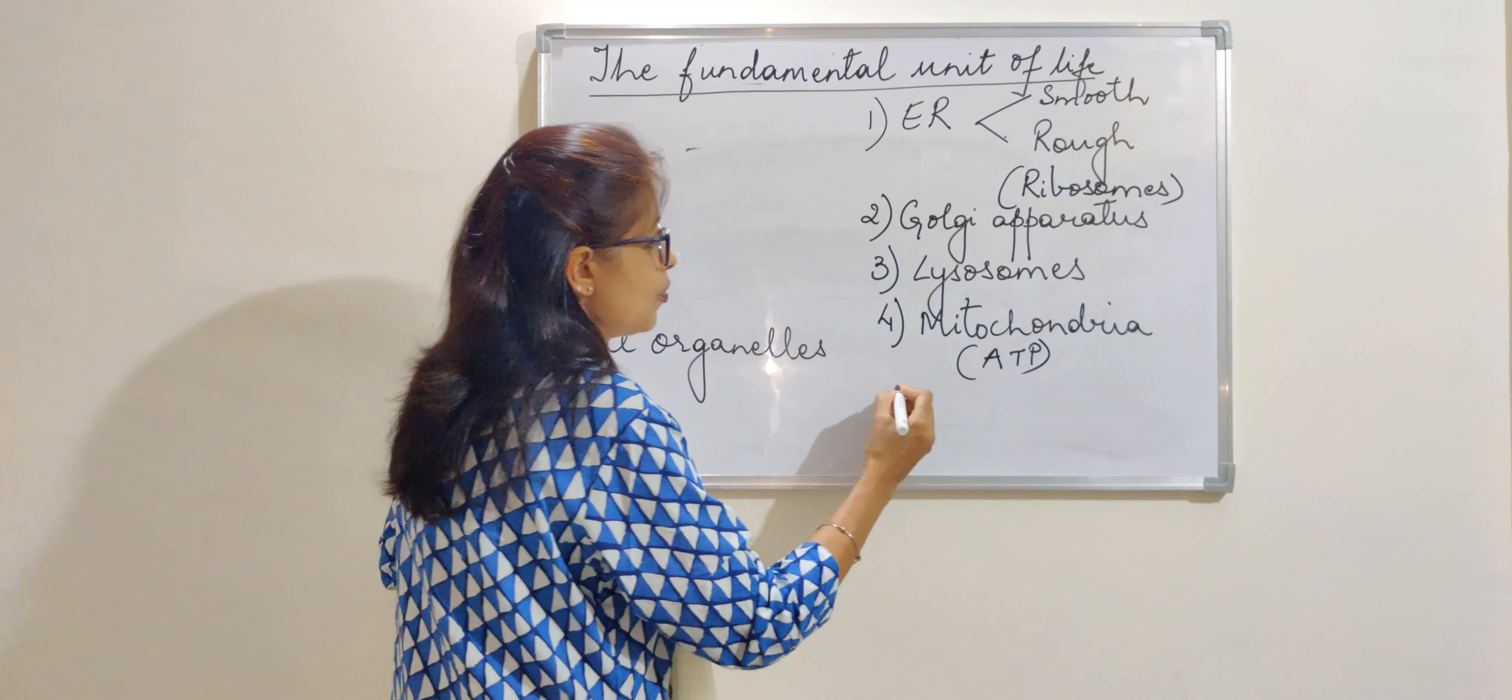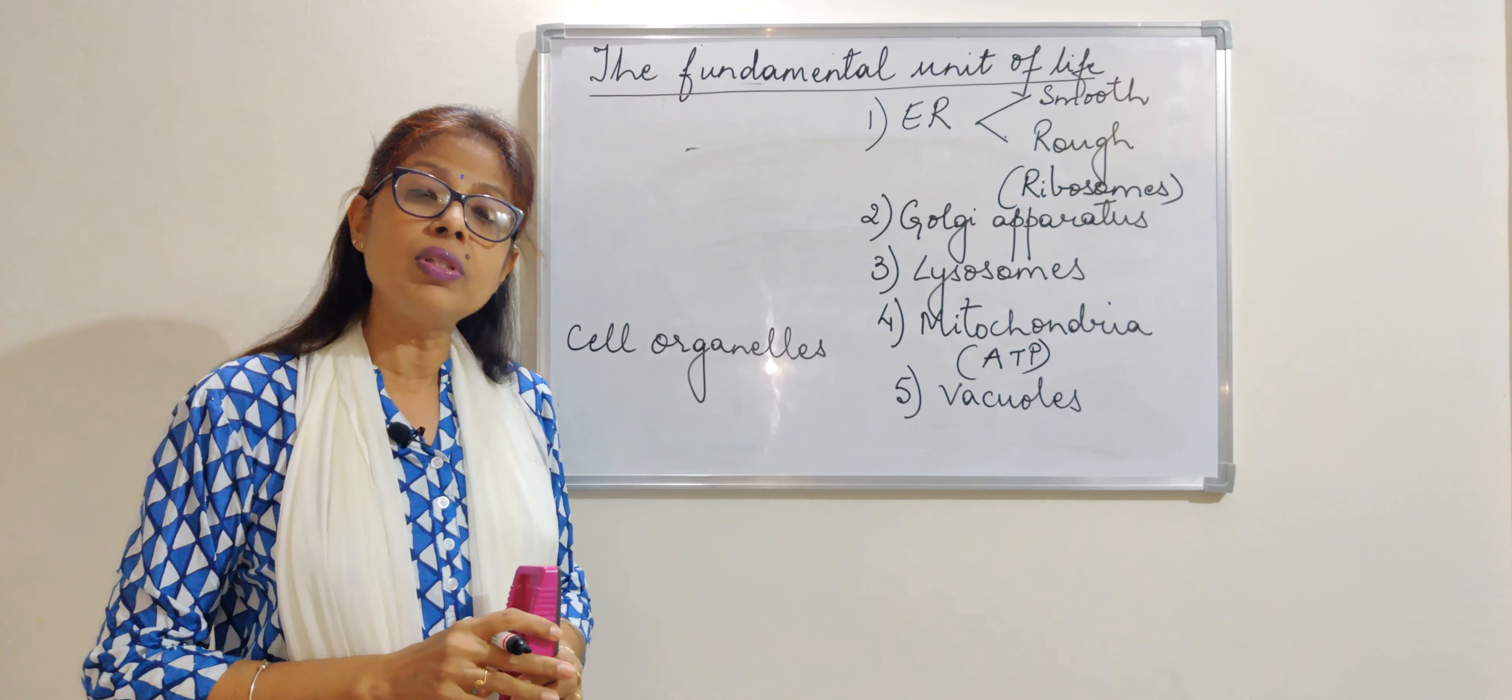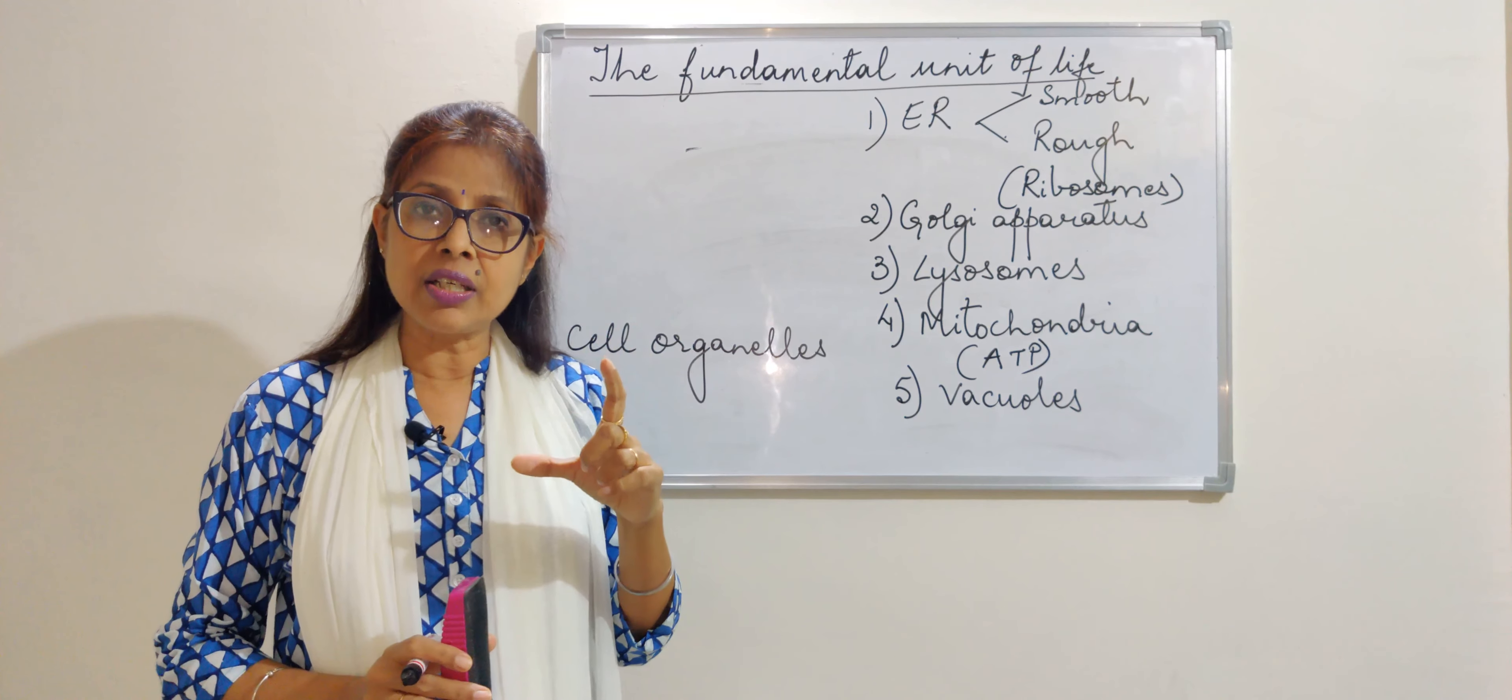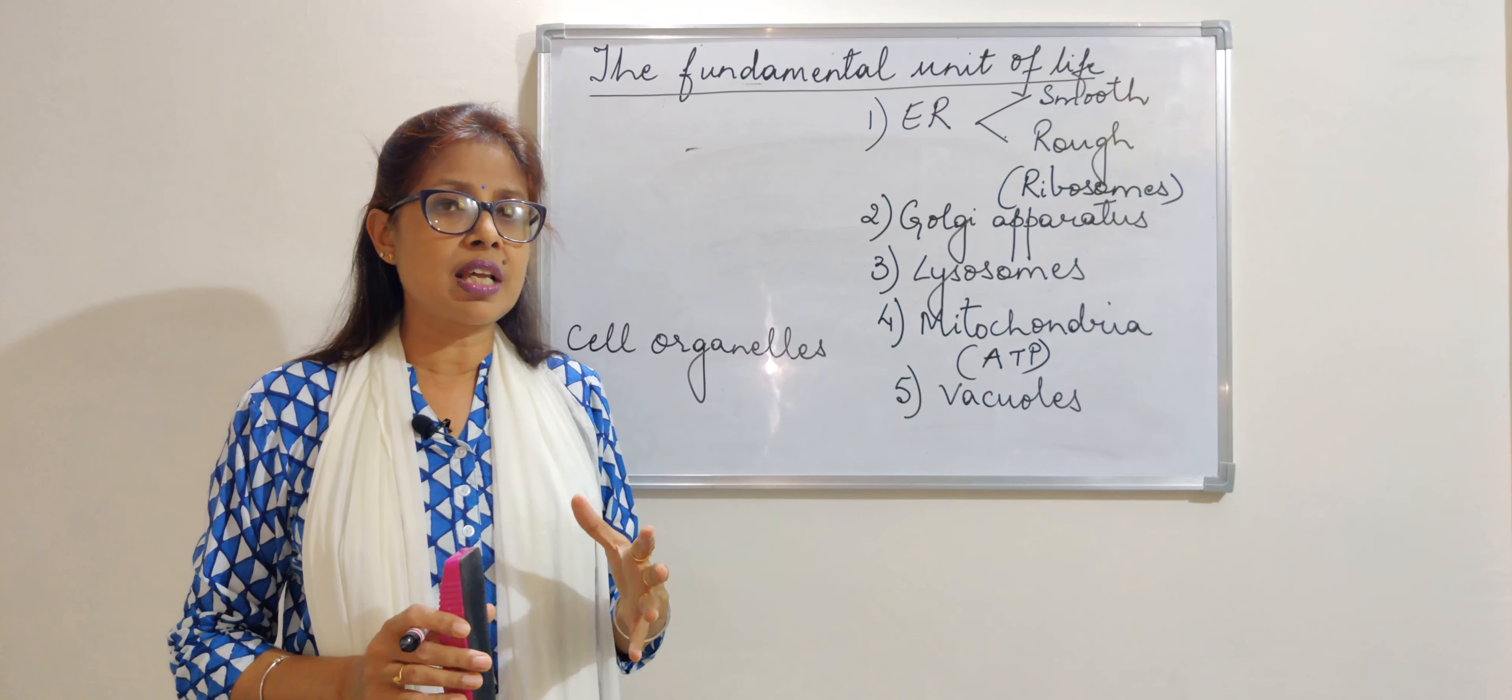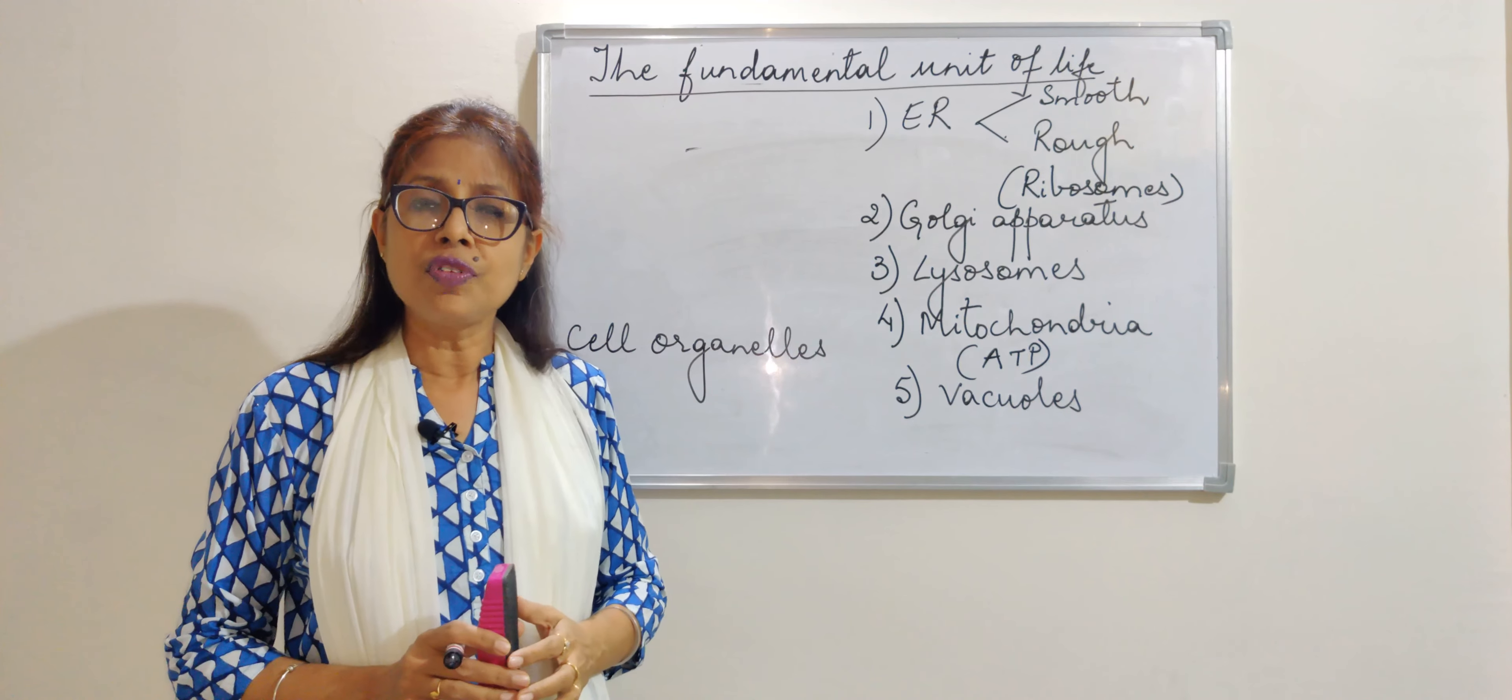Next, we come to the vacuoles. Vacuoles are present in almost all cells, but they are more prominent in plant cell. They are in the center and they contain the cell sap. They store the cell sap. The moment the waste is accumulated, they throw it out, and finally they take the place again for the next lot of waste.